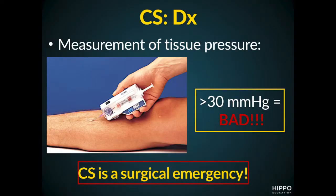We can also use additional findings to help make the diagnosis. We can find tight compartments on physical exam — if you get your finger pushed right on the bridge of your nose, that's what a tight compartment feels like: hard and firm. We can also measure tissue pressure using a handheld pressure manometer. If the intercompartmental tissue pressure is greater than 30 millimeters of mercury, that's a bad sign. Importantly, compartment syndrome is a surgical emergency requiring emergent orthopedic consultation.